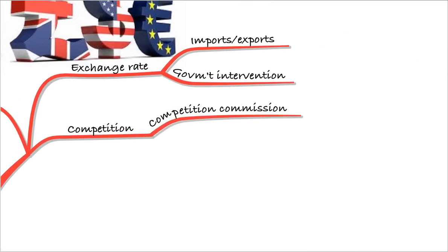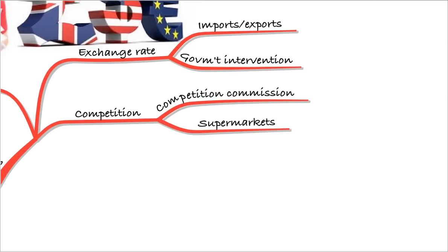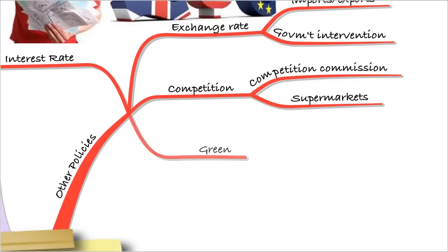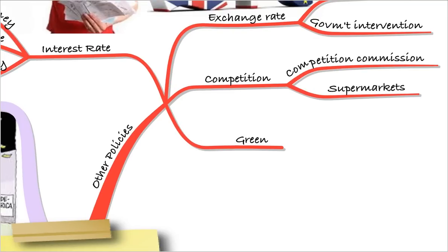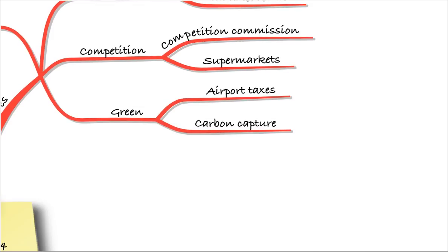Competition: every economy will have something akin to the Competition Commission. Remember, competition is good for the consumer, so the government should be trying to make competition part of the economy. For example, in the UK, supermarkets would be an area where the government tries to maintain competition, because with only several large players in the market, they must prevent buyouts of smaller competitors. There may also be green policies — things like airport taxes and carbon capture — all tied to reducing CO2 emissions and making the economy more environmentally friendly.